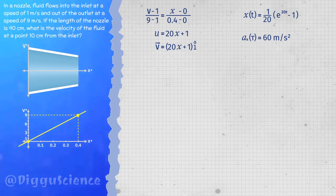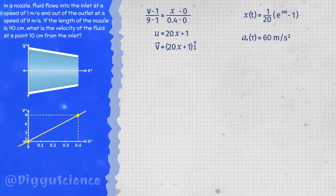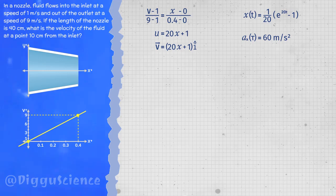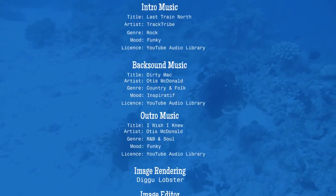Through the Lagrangian description we must know the path taken by the particle, and from there we can calculate the velocity and acceleration of the particle. In reality, the fluid consists of many particles moving through various different paths. The Lagrangian description is accurate but almost uncomputable. Happy learning everyone!